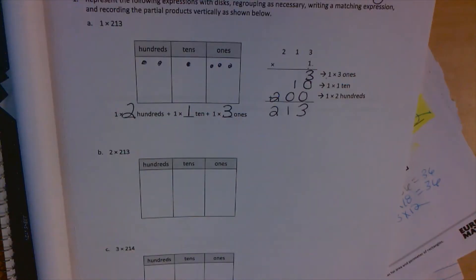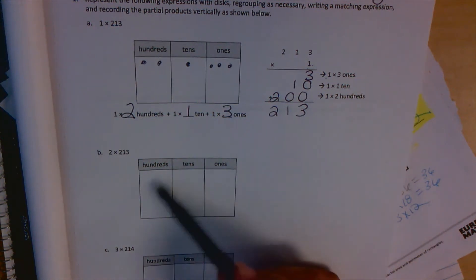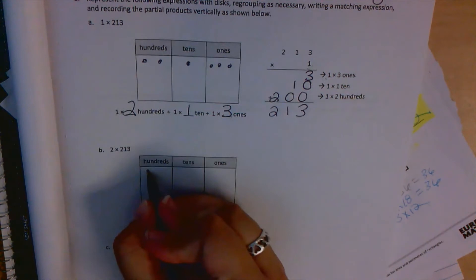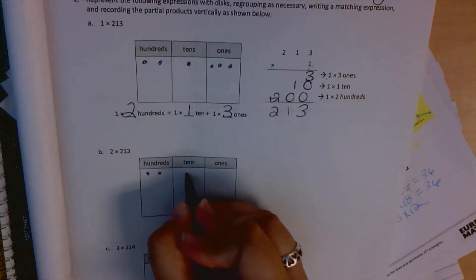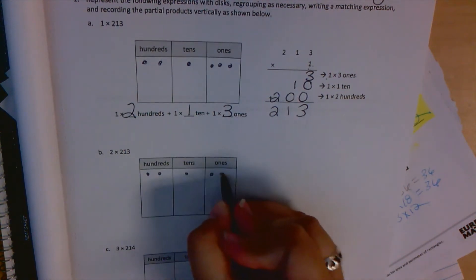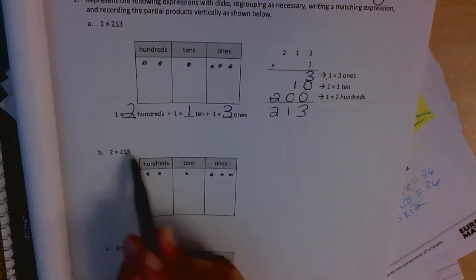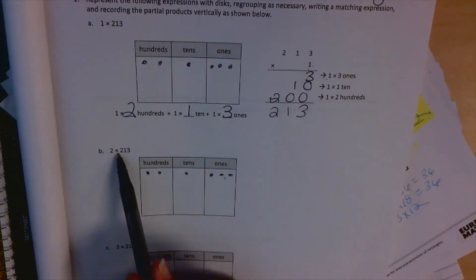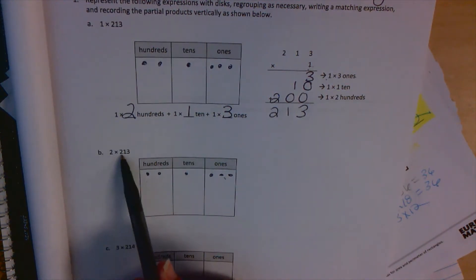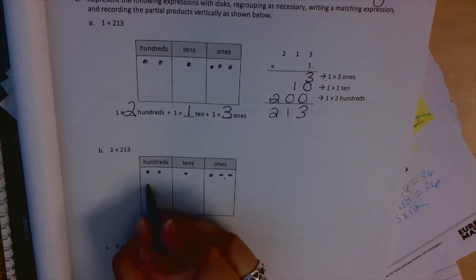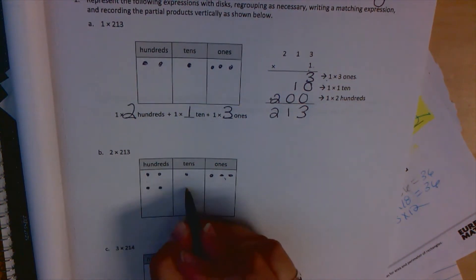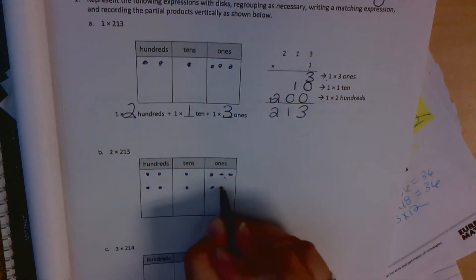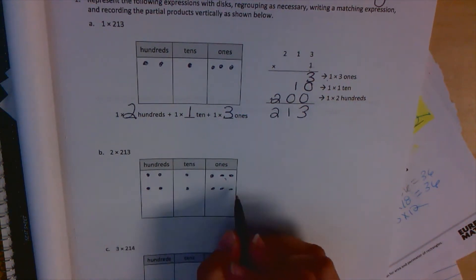Let's do the same problem, but with 2 times 213. I'm first going to start with putting 213 into the place value chart. So that's 200, 1 ten, 3 ones. And this is times 2. So we want this 2 times. So I'm going to do 200, 1 ten, 3 ones. A second time, we have 213 two times.